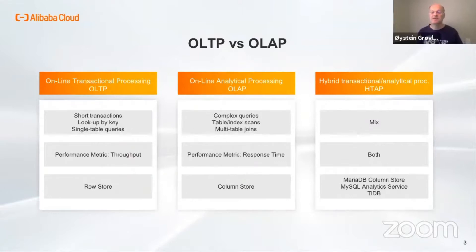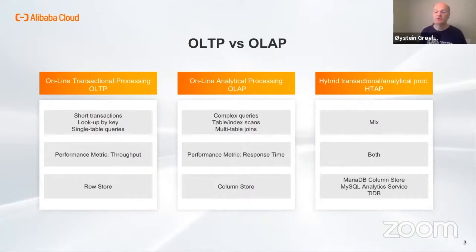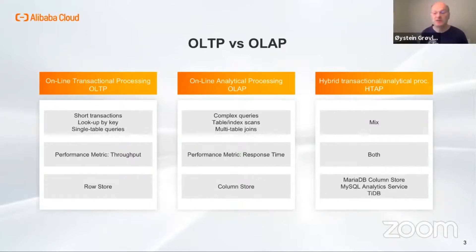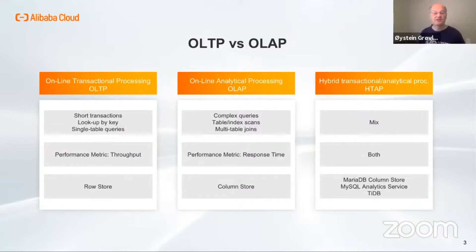In later years, people have started to talk about a hybrid system categorized as HTAP, where a row store and a column store are tightly integrated into the same system. For example, MariaDB ColumnStore or MySQL Analytics Service. But I will not discuss those in this presentation.